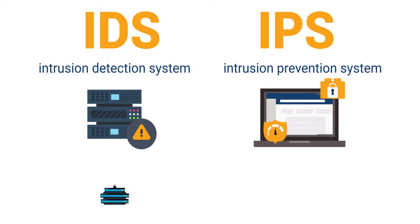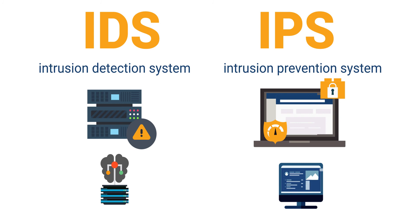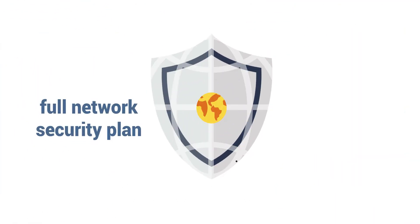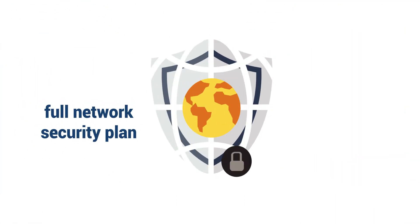An IDS can be used initially to determine the best rules to catch the most intrusions, while an IPS can be set up after to bolster security in locations where IDS is less effective. Whichever system is used, the most important thing is that you have a full network security plan that's actively monitoring for intrusions.